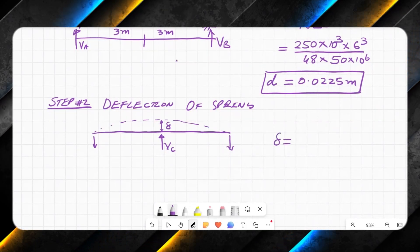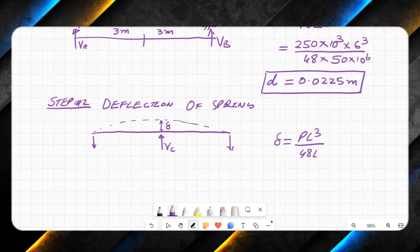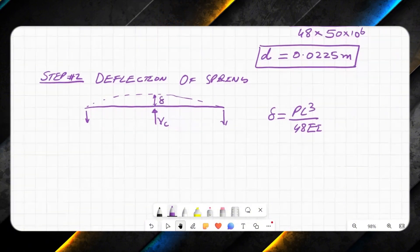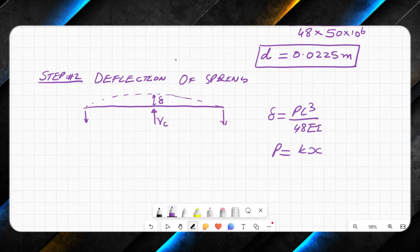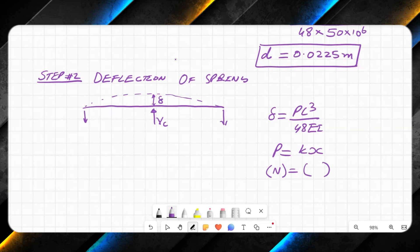This deflection is small delta again. Applying the same formula, delta equals PL³ over 48EI. Here I can say that P is equal to k times x by Hooke's law.